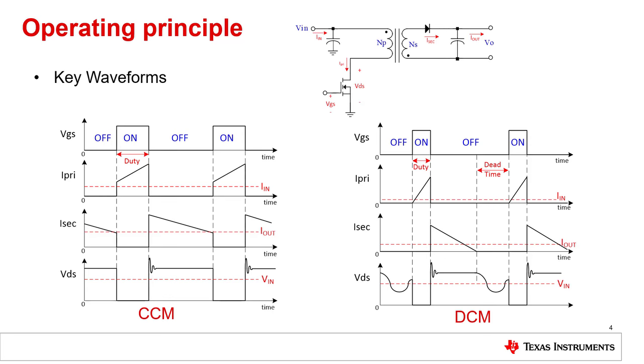As soon as the switch opens, the current in the transformer has no path to flow on the primary side, so it is transferred to the secondary side and the voltage across the switch rises to VIN plus the reflected output voltage. The current changes the voltage across the secondary winding into positive. The diode now conducts, charging the output capacitor and supplying the load.